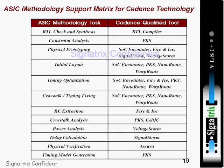For timing optimization, Encounter, Fire and Ice, PKS, Nano Route, and WRP Route all have that feature. Cross-talk and timing fixing are very important in deep sub-micron technology, which is why EDA vendors are now providing cross-talk analysis as a separate dedicated feature in their tools. For this they use SOC Encounter, PKS, Nano Route, and WRP Route.